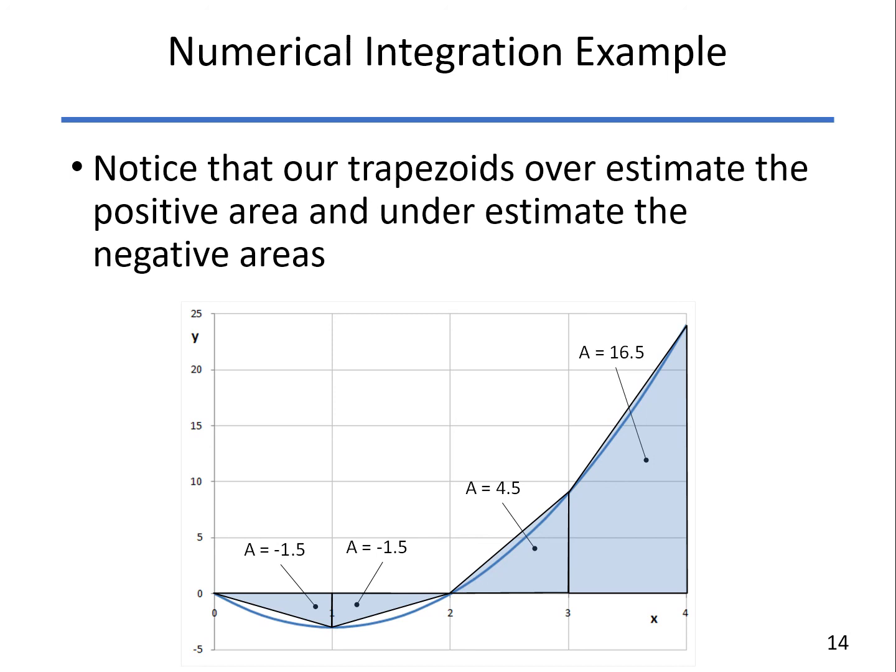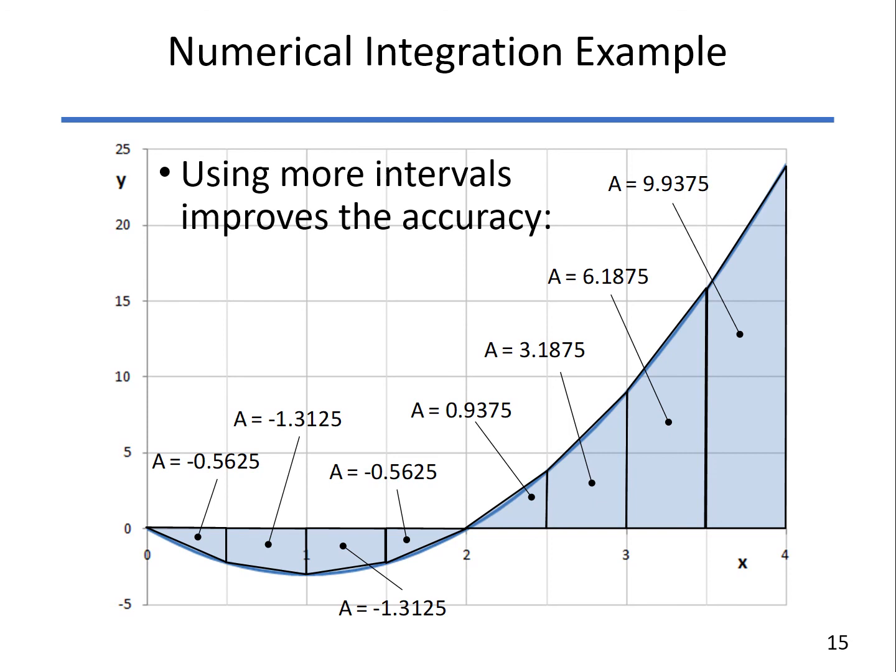Now, of course, we can get a better answer by using more intervals. So in this case, instead of every one, we looked at every half unit, which means that we have eight intervals and nine endpoints. And when we add these up, we come a lot closer to our known exact answer of 16. Our answer now is 16.5.